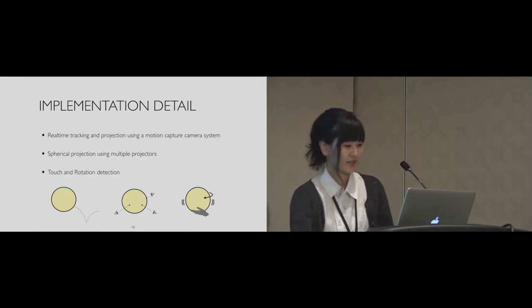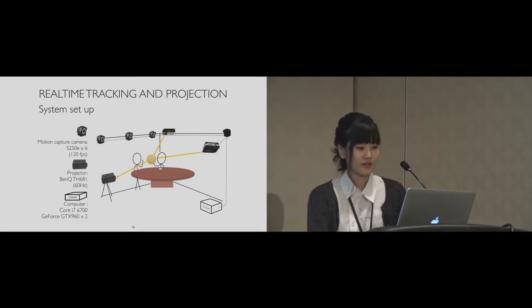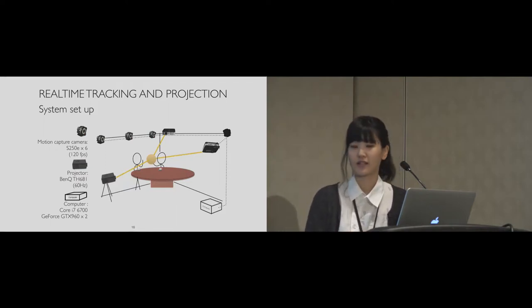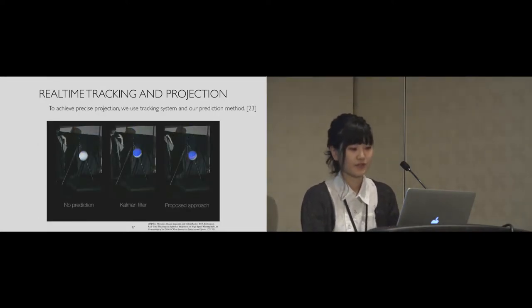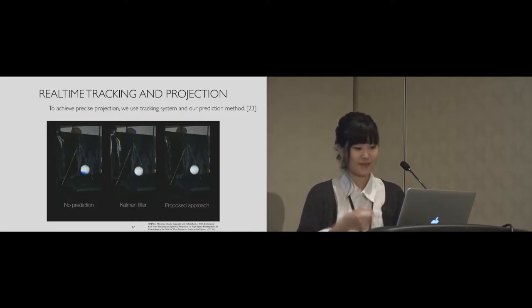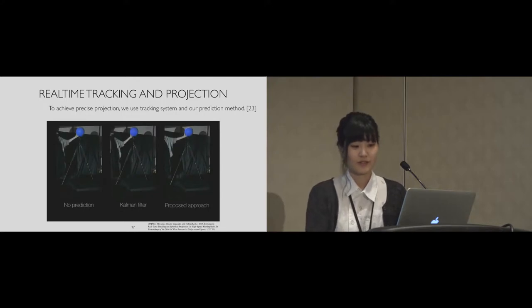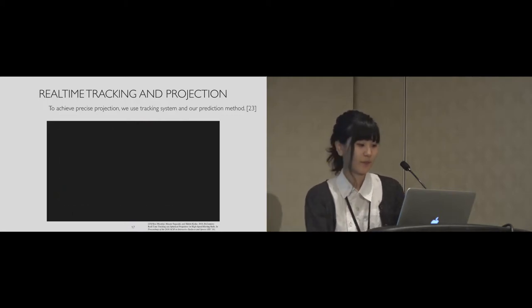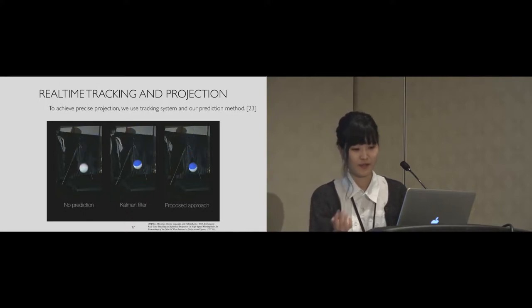First, about real-time tracking and projection. The whole system looks like this. We have constructed a projection mapping environment with multiple projectors. In this configuration, six motion capture cameras were installed for real-time tracking, and the display device is wrapped with retro-reflective sheet to be tracked from these cameras. To achieve precise projection, we use tracking system and our prediction method. If you project images onto a moving object based on the raw data, projection will be saved from the target like the video on the left. So we use prediction method for the target position and succeed in precise projection, as you can see in the video on the right. We don't have enough time to explain the method, so please refer to our previous paper.